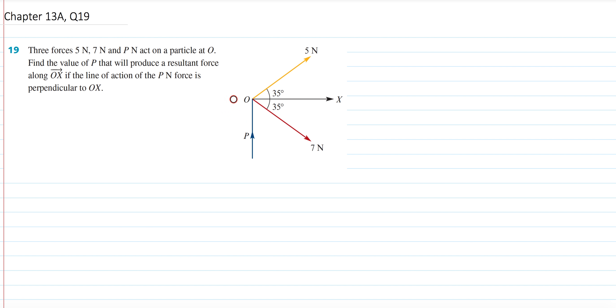Find the value of P, so the magnitude of that force, that will produce a resultant force along the line OX, the vector OX, so going horizontally, if the line of action of the PN force is perpendicular to OX. So this force right here is going perpendicular to OX, so it's just going straight up.